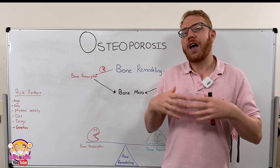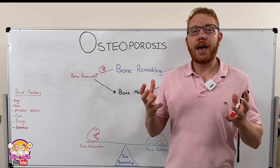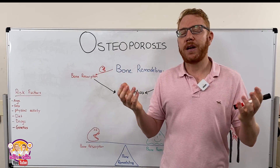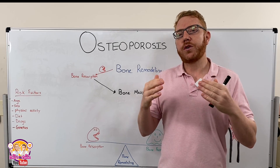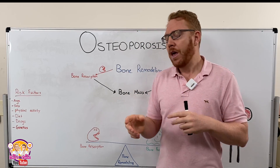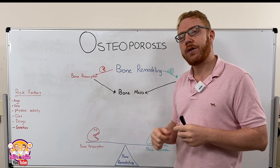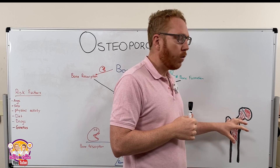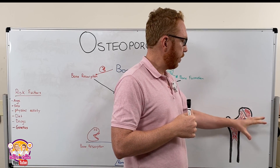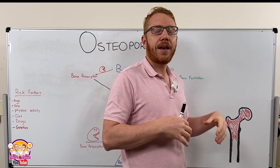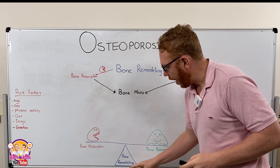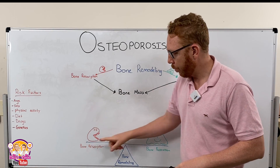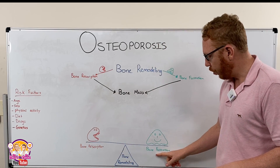When we look at bone, we might think of it like a brick house — static, just providing support. But in fact it's a very dynamic tissue that is constantly being turned over. This is known as remodeling, and the whole bone would remodel between four to ten years.